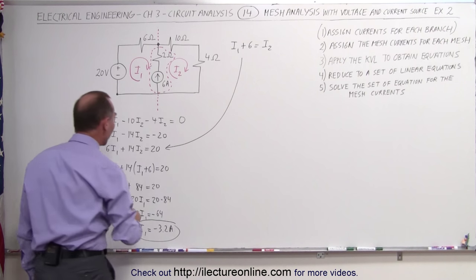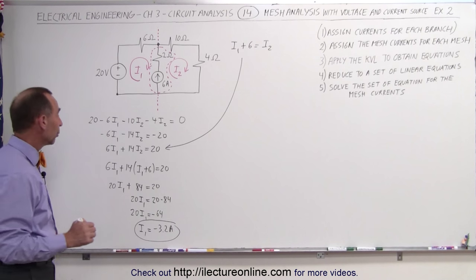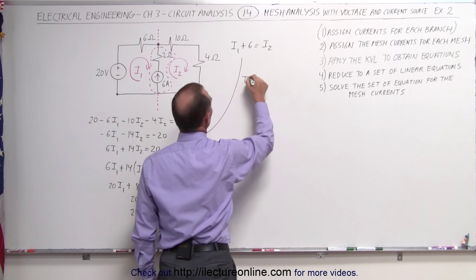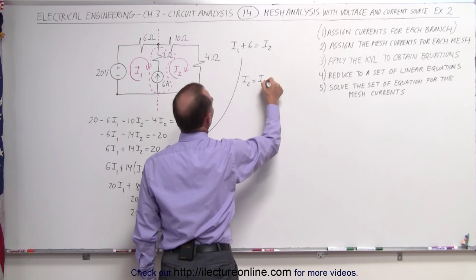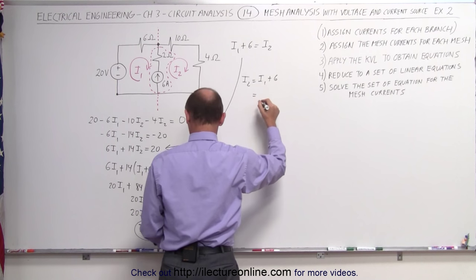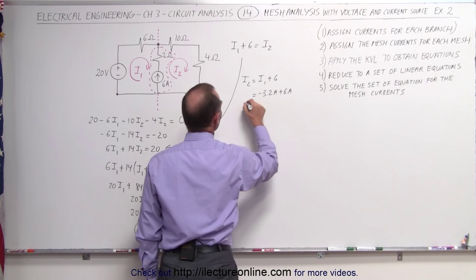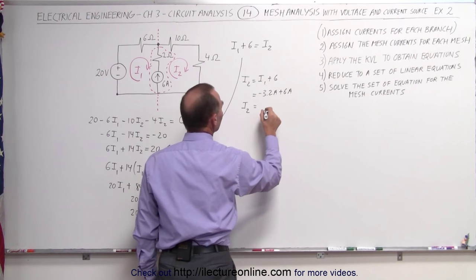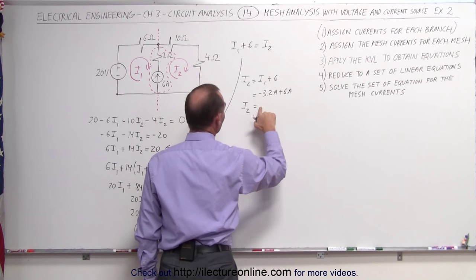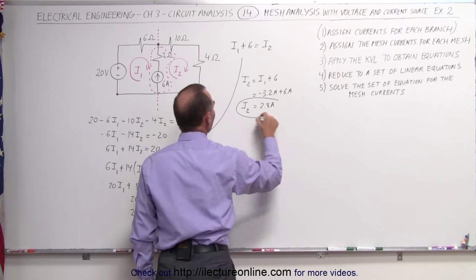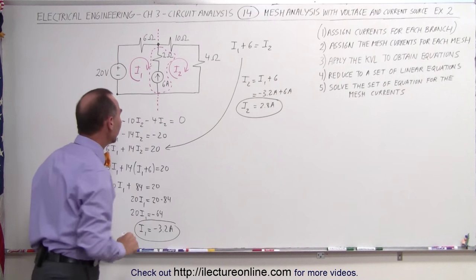Once I know what I1 is equal to, then I can find out what I2 is equal to. Now I can come back over here. Since I2 equals I1 plus 6, that equals minus 3.2 amps plus 6 amps, which means that I2 equals, oh a plus, not a minus, a plus 2.8 amps. And now I have I2 and I have I1.